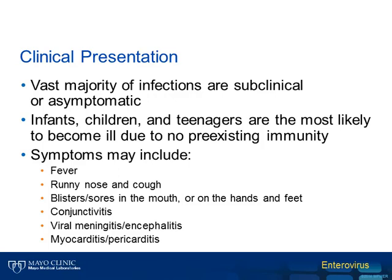If symptoms occur, they may include a fever, runny nose, and cough, and in some cases, blisters or sores in the mouth or on the hands and feet. This syndrome, known as hand, foot, and mouth disease, is a relatively common outcome of enterovirus infection in young children. Additional symptoms can include conjunctivitis, and in more serious cases, viral meningitis, encephalitis, or infection of the heart causing myocarditis or pericarditis.